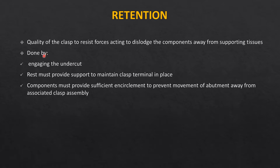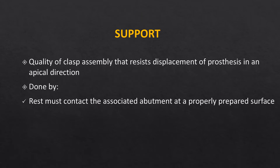Retention is ensured by engaging the clasp in the undercuts. The rest should provide vertical support to maintain the clasp terminal in its appropriate place, because if the rest is slipping, the retentive terminal will not be in the proper position, resulting in dislodgement of the cast partial denture. The components must provide sufficient encirclement to prevent movement of the abutment tooth away from the clasp assembly.